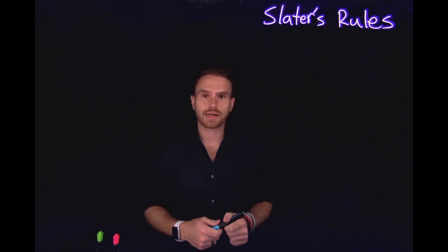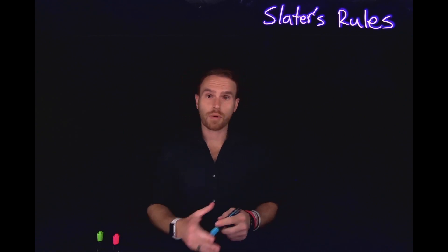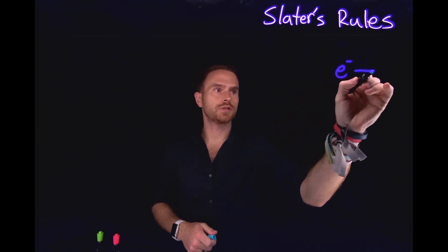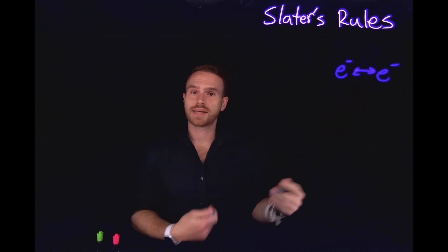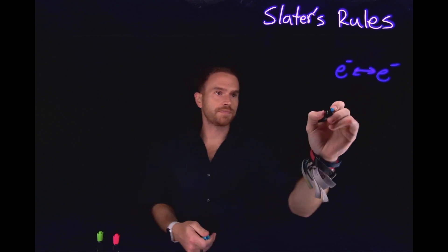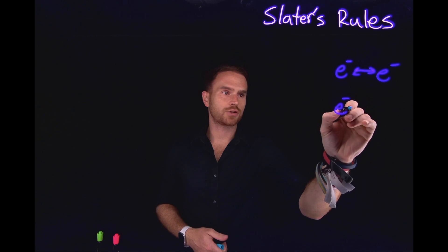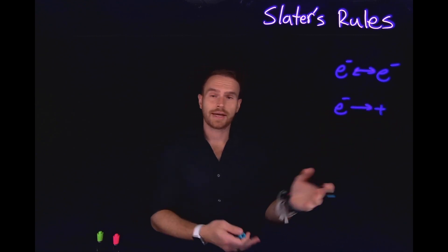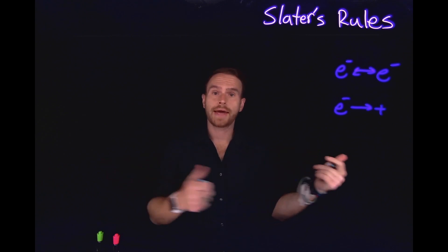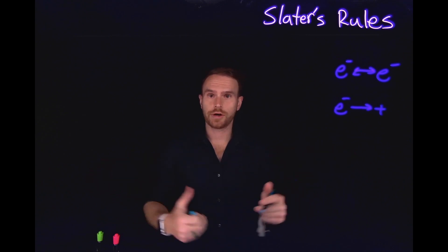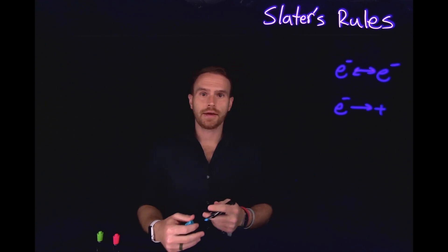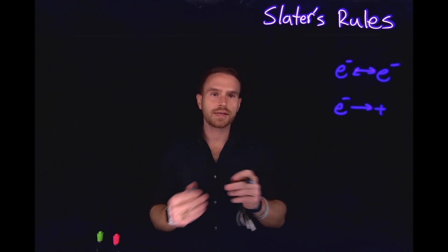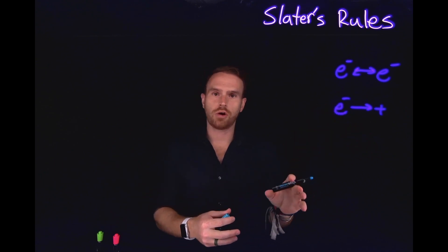Coulomb's Law basically states that like charges repel one another. For example, two electrons are going to repel one another because they both have negative charges, whereas there is going to be an electrostatic attraction between protons and electrons. So like charges repel and opposite charges attract one another, and this plays a really important role which is why Coulomb's Law is so important.